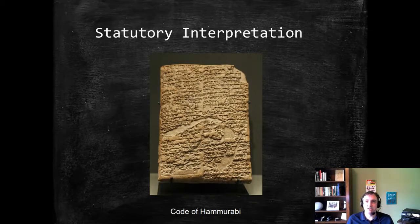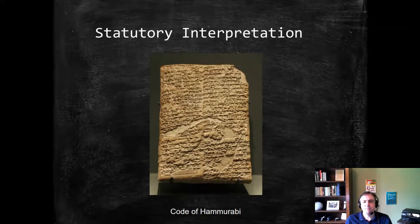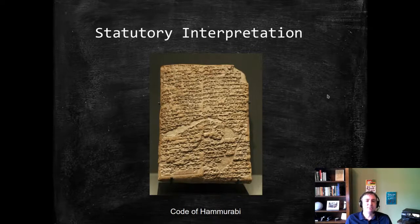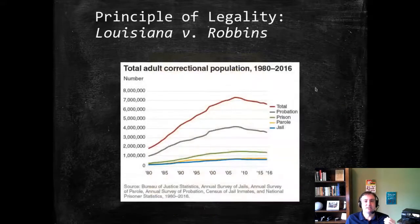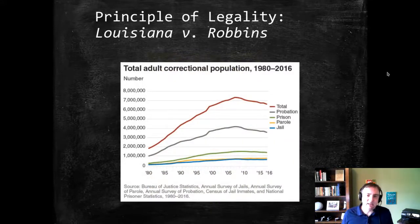What do we do when we're faced with ambiguity is one of the big questions of the chapter. But before we get to that, and related to the idea of codification, it's important for us to examine the concept of the principle of legality. We do that by looking at Louisiana v. Robbins and the brief excerpt before it.